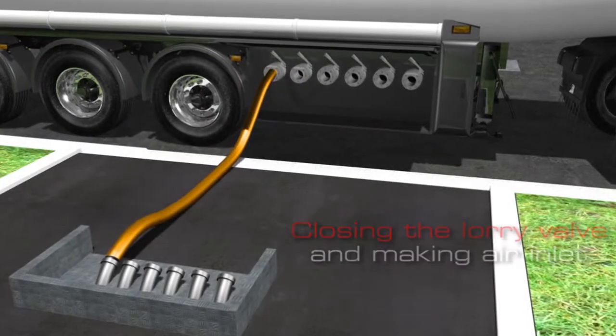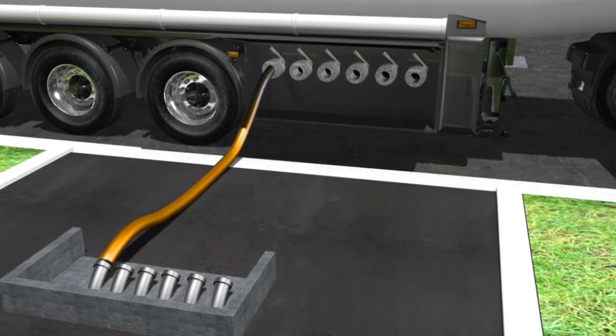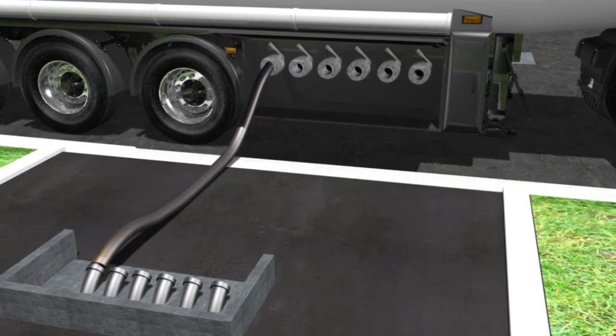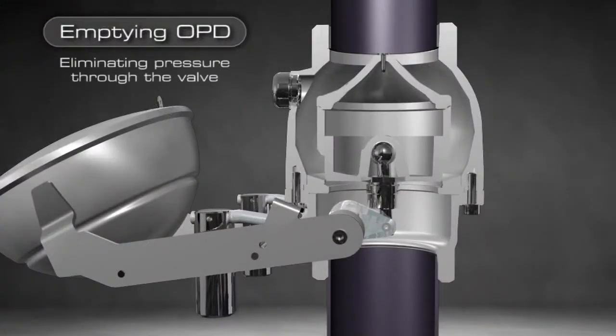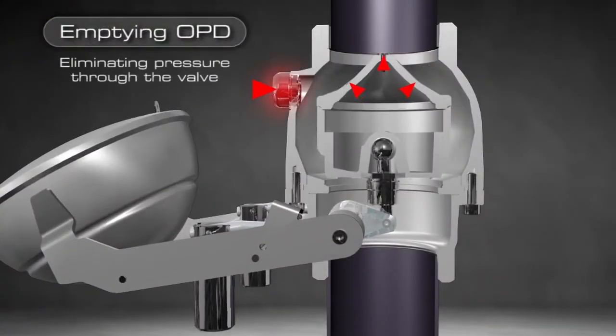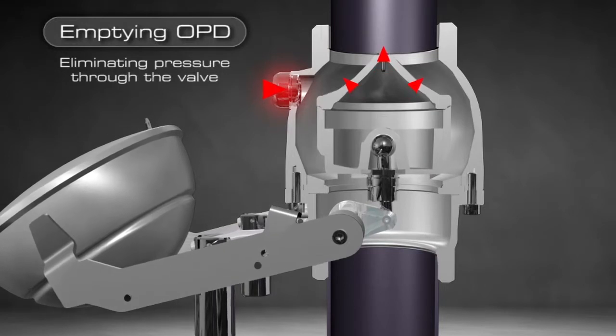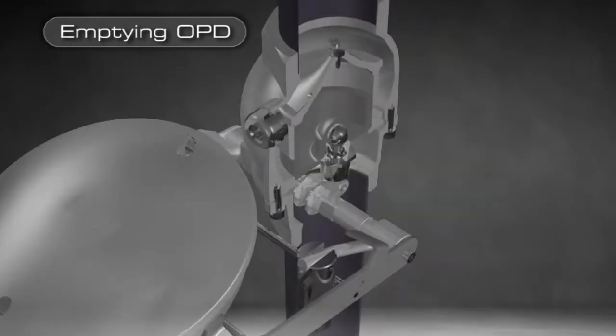For the emptying process, the driver must close the lorry valve and set the additional air inlet to its usual position. The hydraulic pressure is then eliminated inside the device thanks to the valve, as you can see here in red.